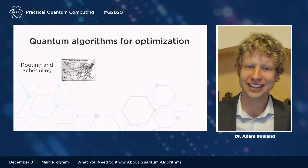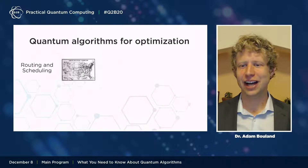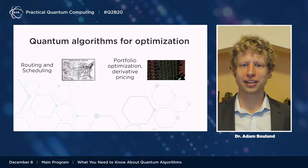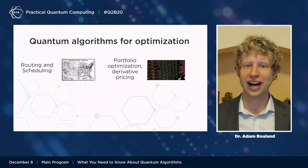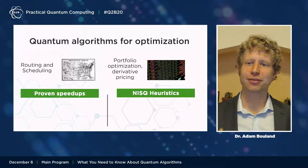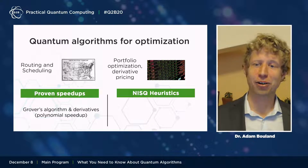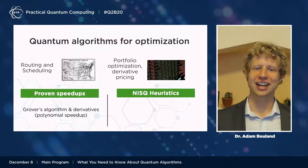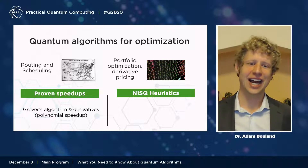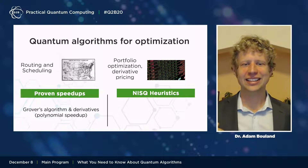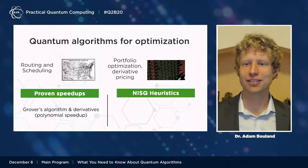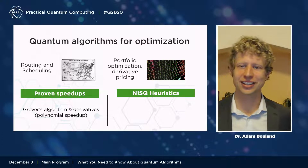Optimization is ubiquitous in industry, appearing in logistics problems like routing and scheduling, and frequently in finance, for instance in portfolio optimization. The proven speedups we have for optimization problems tend to be derivatives of Grover's algorithm, first discovered in the 90s, which provides a generic polynomial speedup for many optimization tasks. There are many different derivatives of this algorithm that have extended the Grover speedup to cover many different classical optimization methods.